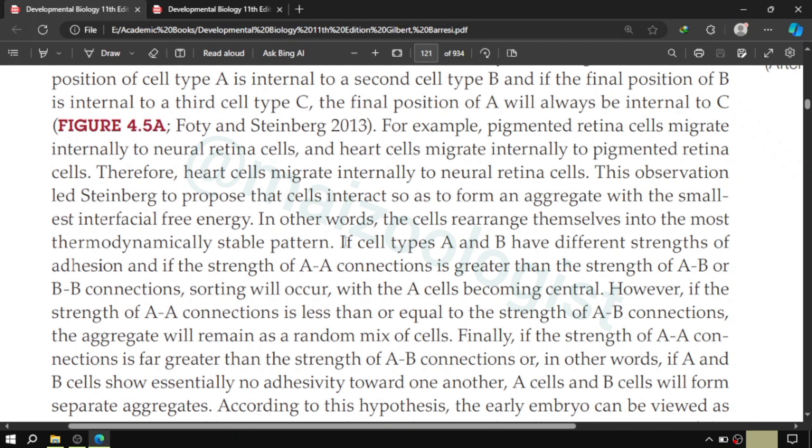If cell type A and B have different strength of adhesion and if the strength of AA connection is greater than the strength of AB connections or BB connections, sorting will occur with A types becoming central. Because AA bond is stronger than AB bond or BB bond, so A will form bond with A.